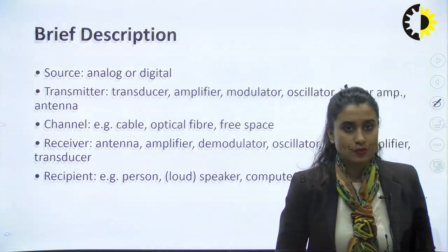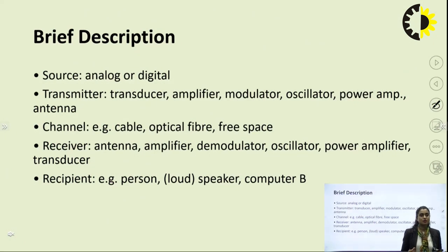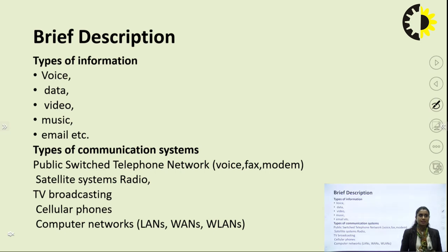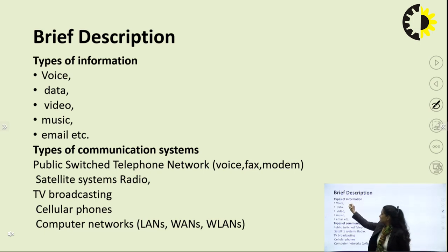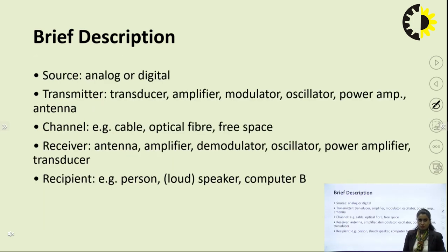What does the source do? The information source generates information, which could be in the form of voice, data, video, music, email, or pictures. These are the different types of communication systems we may study, which includes PSTN (public switch telephone network), satellite systems, radio, TV broadcasting, cellular phones, and computer networks. These are the types of information that the information source generates.